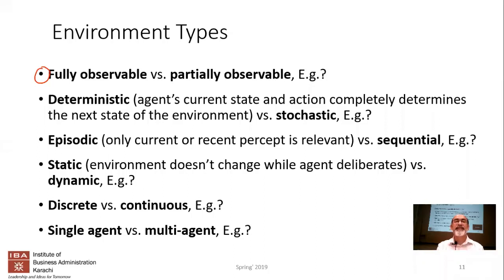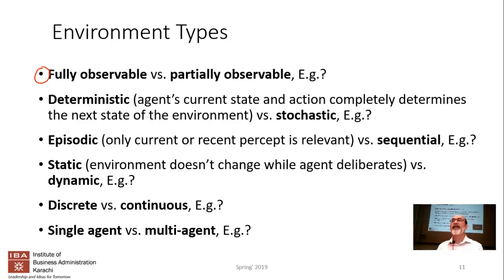Deterministic means the agent's current state and action completely determines the next state of the environment. If you're driving and want to turn right, will the car always turn right 100% of the time? In a snowstorm, your car might skid — you turn the wheel right but the car doesn't go right. There's a small probability that the action doesn't produce the expected outcome.